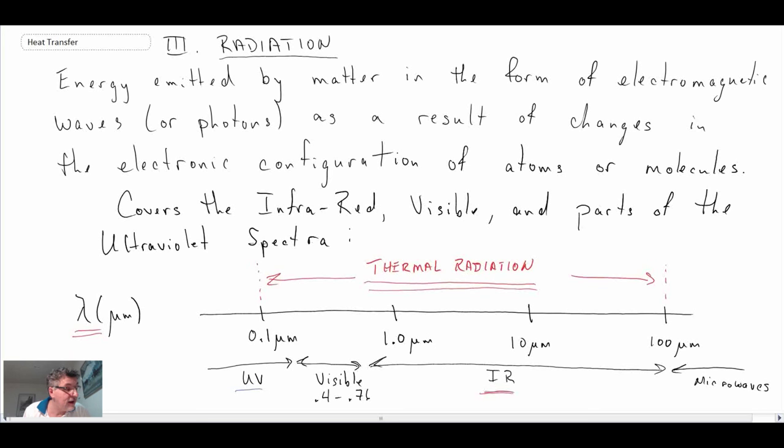And solar radiation typically would be anywhere from 0.3 up to 3 microns. So our eyes are only able to see a small portion of the actual spectra that exists. So if we're looking at solar radiation from the sun, that would be the range of solar radiation.